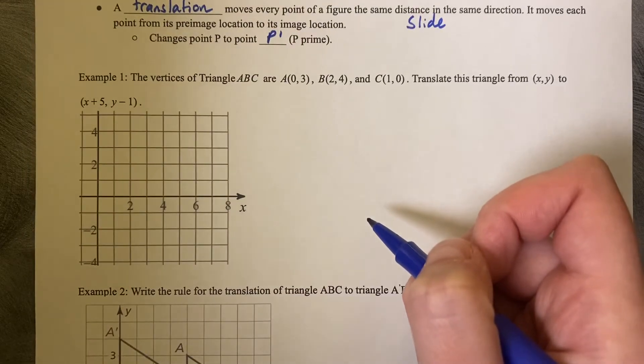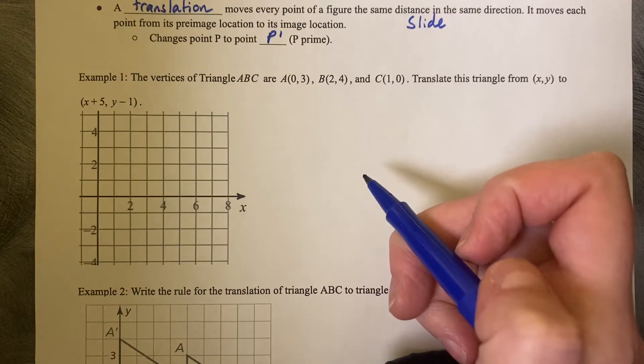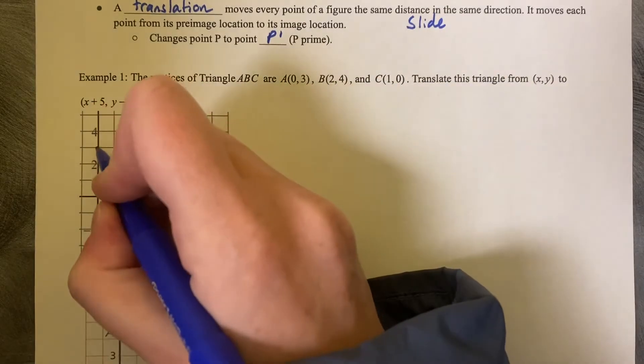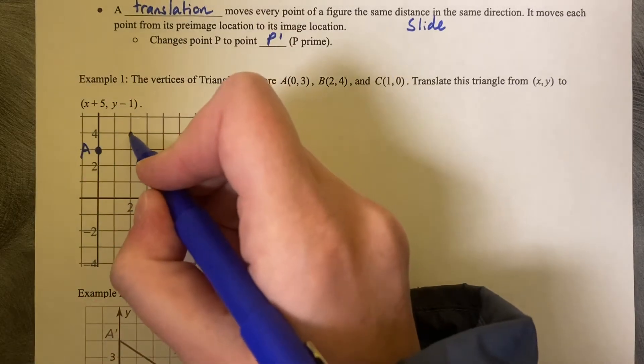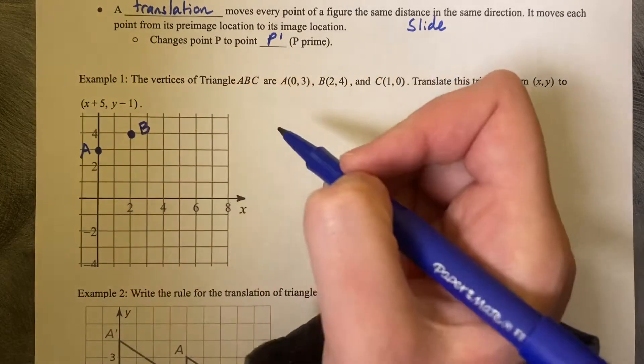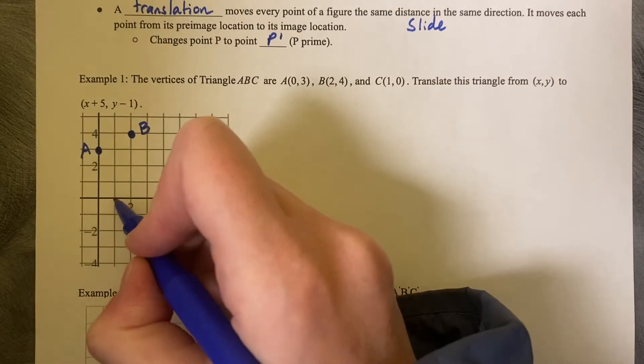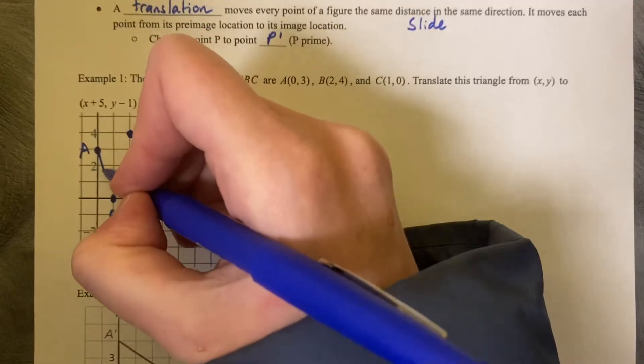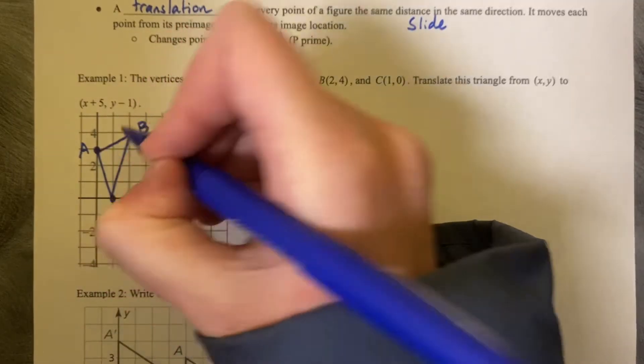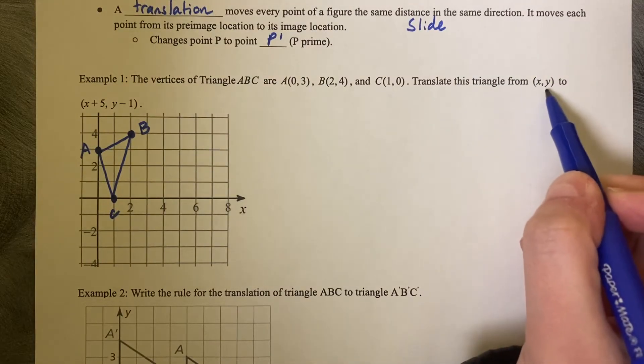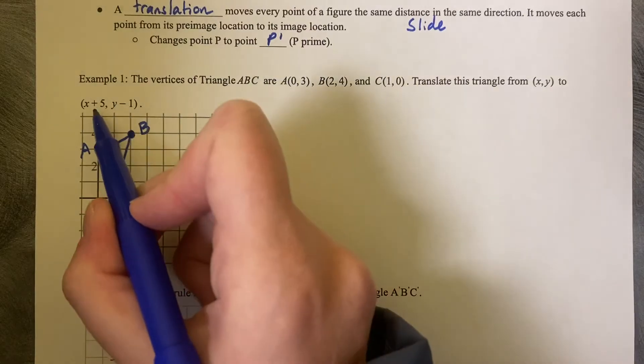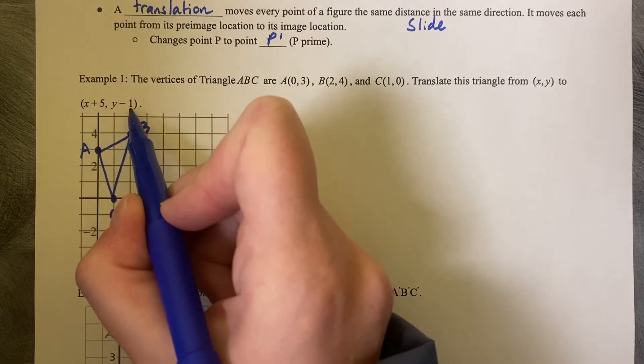Example 1. The vertices of triangle ABC are (0,3), (2,4), and (1,0). Make sure you label each point A, B, and C. 0,3 is A, 2,4 is B, and 1,0 is C. This is a triangle, so we can connect this up ABC. Translate the triangle from XY, so that's your pre-image, to X plus 5, Y minus 1.